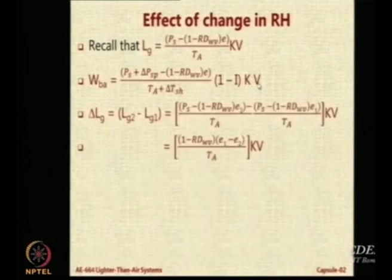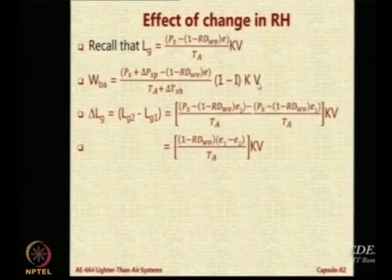So if you take the difference of the gross lift after and before, that is Lg2 minus Lg1, you get the expression as shown. In this expression you can see that the Ps terms can actually cancel out. So what will be remaining is just 1 minus RDwv into E1 minus E2.